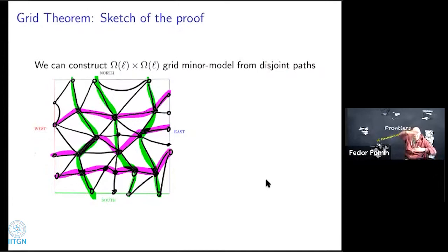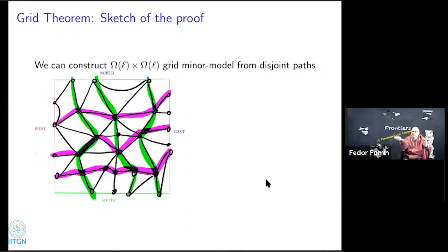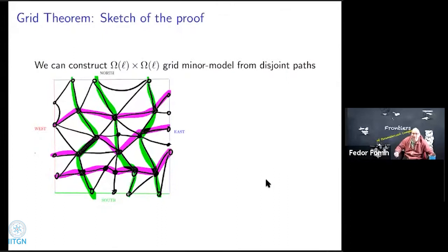When you take the intersection of these ugly paths, you have to carefully prove that the intersection contains a large grid as a minor. This is still true, but it requires being very careful — it's not as trivial as it looks on the picture. The intuition is correct, but there are many things not explained here, and it's not simple.